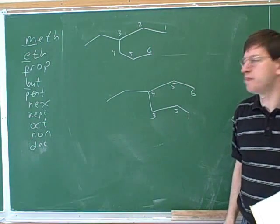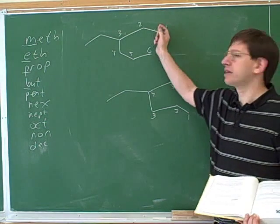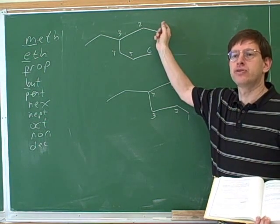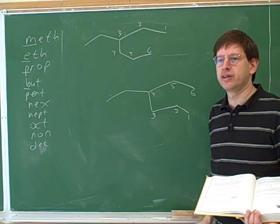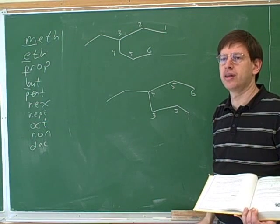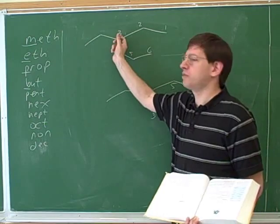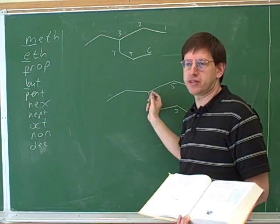So here's two different ways to number the parent chain. We could start the numbering over here, or we could start the numbering over here. So which of these is the correct way to number? The first one. Yeah. Why is this better? Because it's a lower number for the substituent. Yeah. That's right. Here the substituent would have the number three, and here the substituent is the number four.